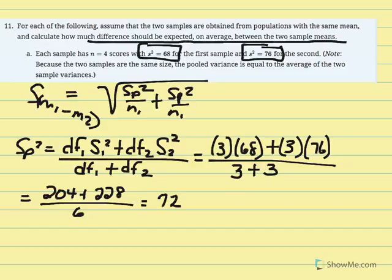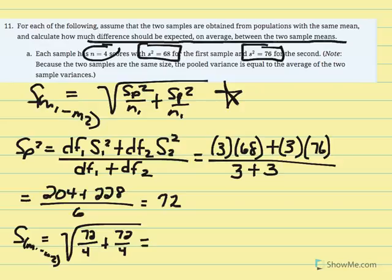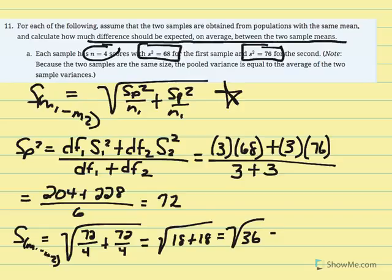Now using pooled variance of 72 to calculate the estimated standard error of the mean difference: square root of (72 over n1 plus 72 over n2), with n1 and n2 both equal to 4. Taking them as separate fractions: 72 divided by 4 equals 18. So we need the square root of 18 plus 18, which is 36, and we get 6.